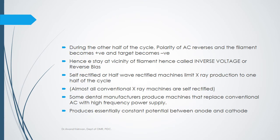Because line voltage is variable, the voltage potential between anode and cathode also varies. The key values we actually handle during x-ray taking are kVp and milliampere (mA). During the other half of the AC cycle, polarity reverses — the cathode becomes positive and anode becomes negative — this is called inverse voltage or reverse bias, and it is rectified by auto transformers.